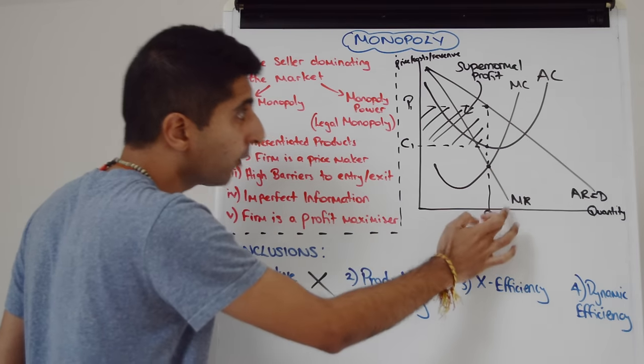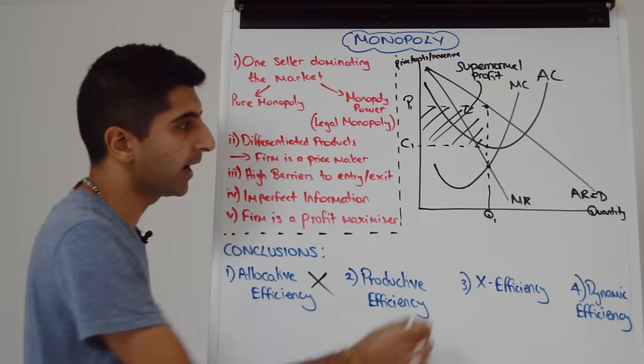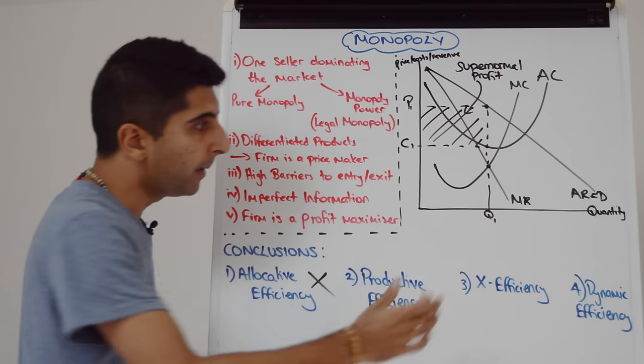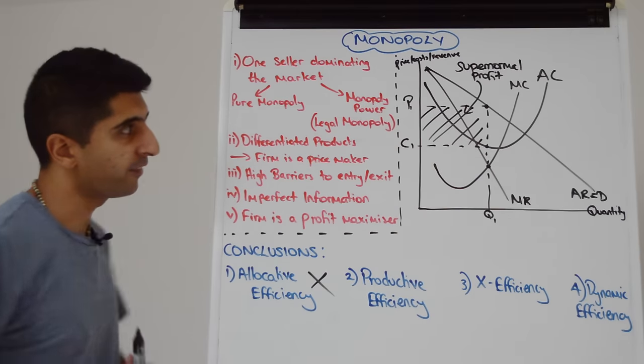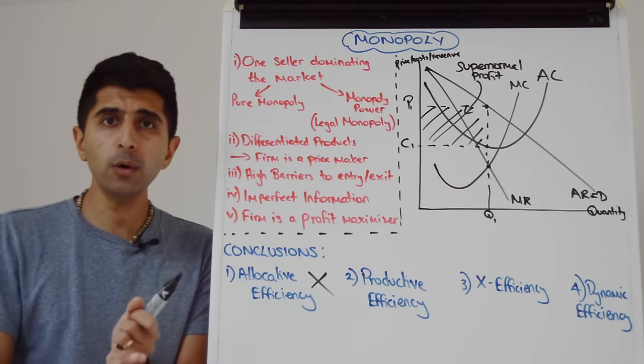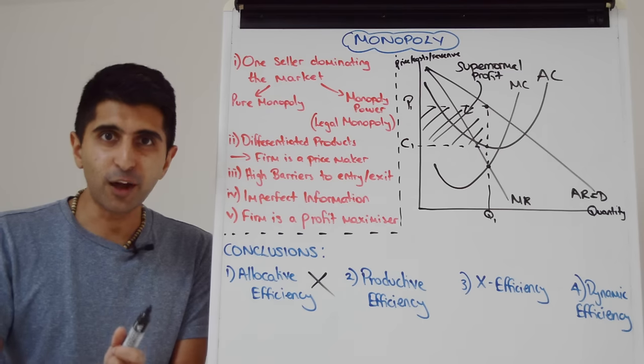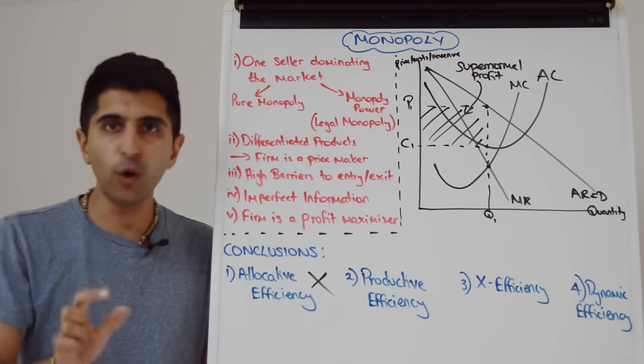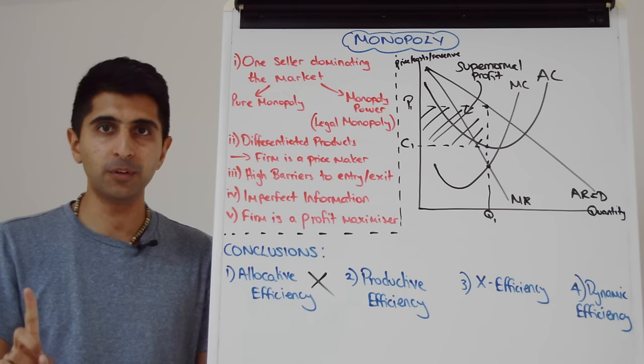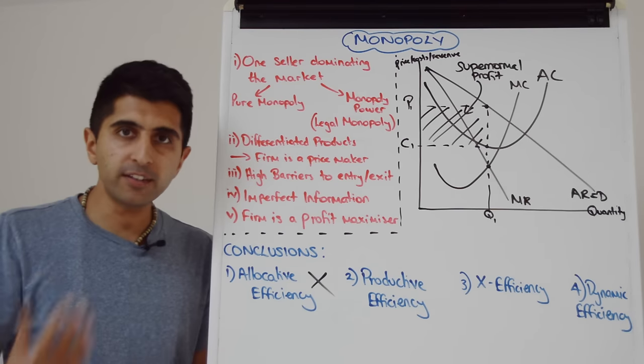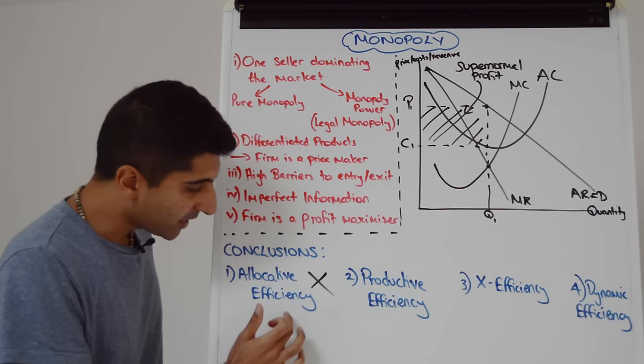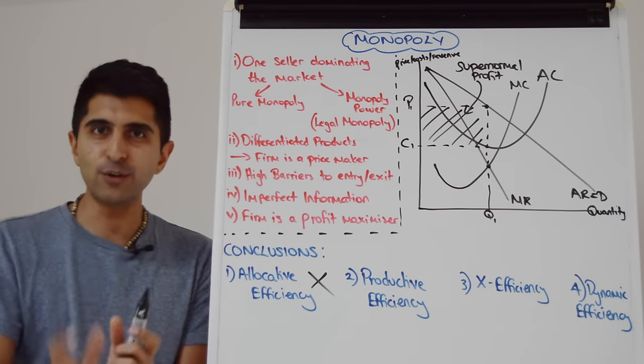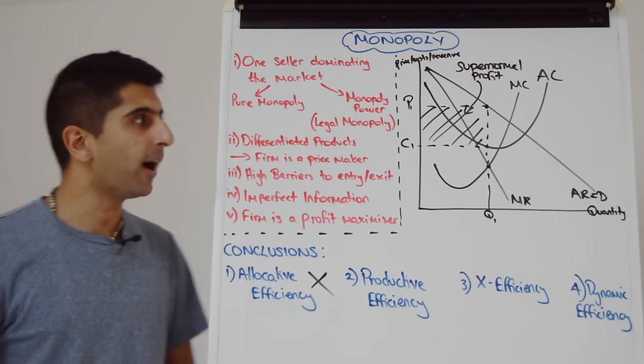But they're also restricting output in this market. Quantity should be higher if we look at where allocative efficiency is in the market. Quantity should be higher, but monopolists are restricting output in order to raise prices and make these profits. So output is low in the market, choice is low in the market as a result. Resources are not following consumer demand at all. There is also risk that quality could be low as well because of a lack of competitive forces here.